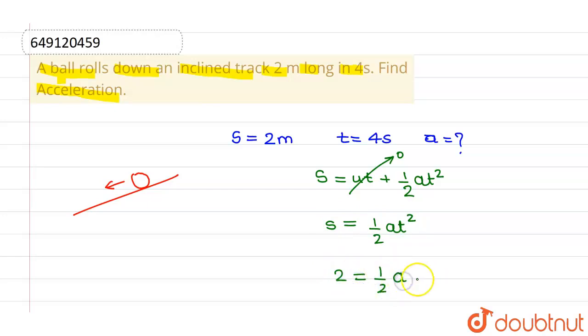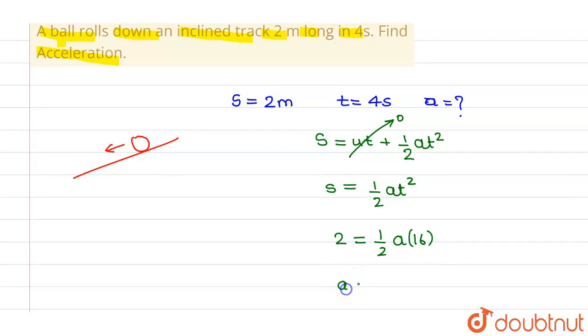...into acceleration we need to find out, and time is 4 seconds, so 4 squared is 16. So from here, acceleration equals 4/16, which can be written as ¼ meter per second squared. This is the acceleration of the ball.